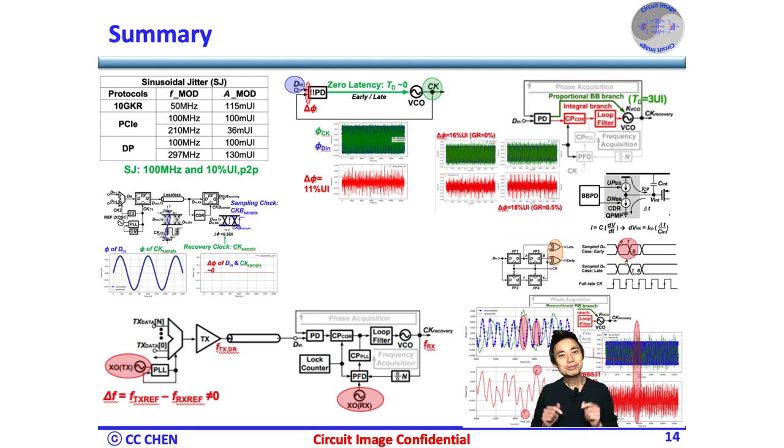which would add latency in addition to the intrinsic CDR design parameters. So, we show an image of how PRBS 31 further degrades the phase error by introducing the latency in the tri-state.